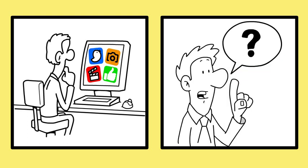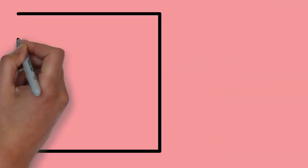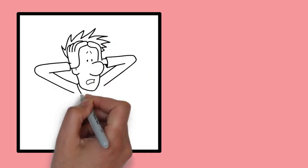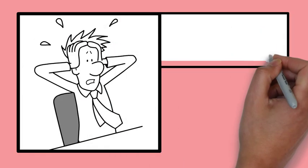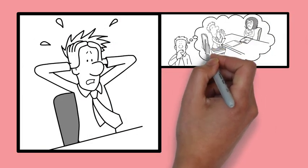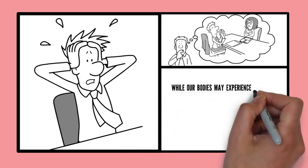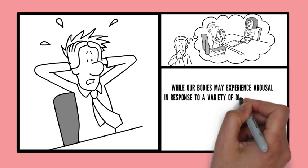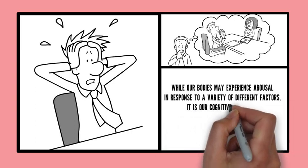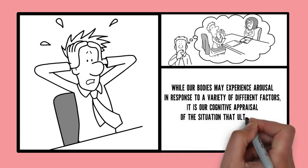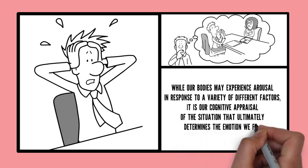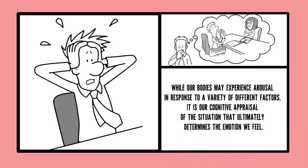In conclusion, the Schachter-Singer theory of emotions suggests that we experience emotions through a combination of physiological arousal and cognitive appraisal. While our bodies may experience arousal in response to a variety of different factors, it is our cognitive appraisal of the situation that ultimately determines the emotion we feel.